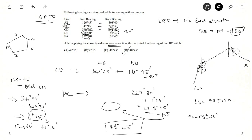The key here is to find out which points do not have local attraction. If DE does not have local attraction, then the backbearing of CD and the forebearing of EA will not have local attraction, and you can reverse the process to find the corrected bearings.